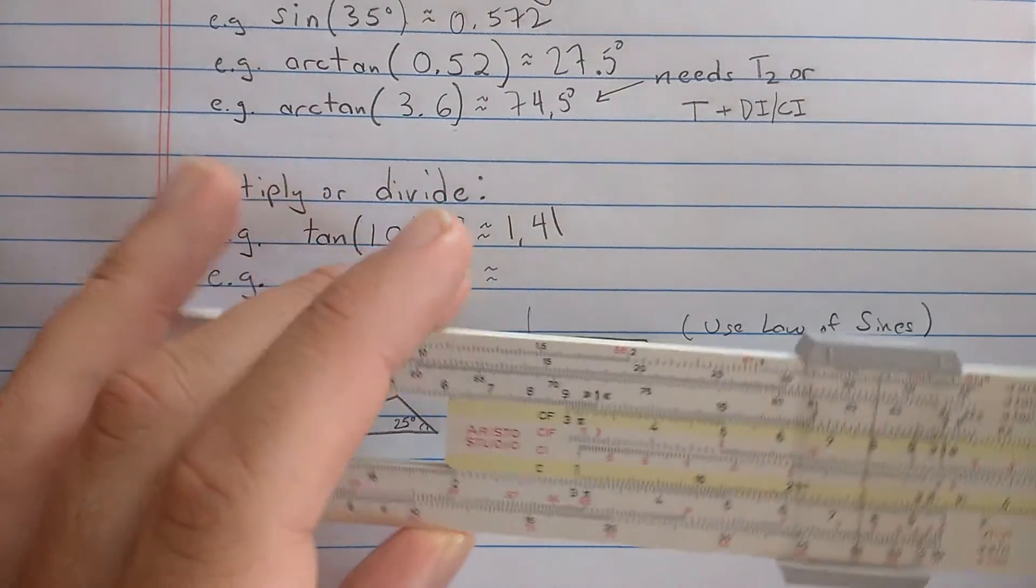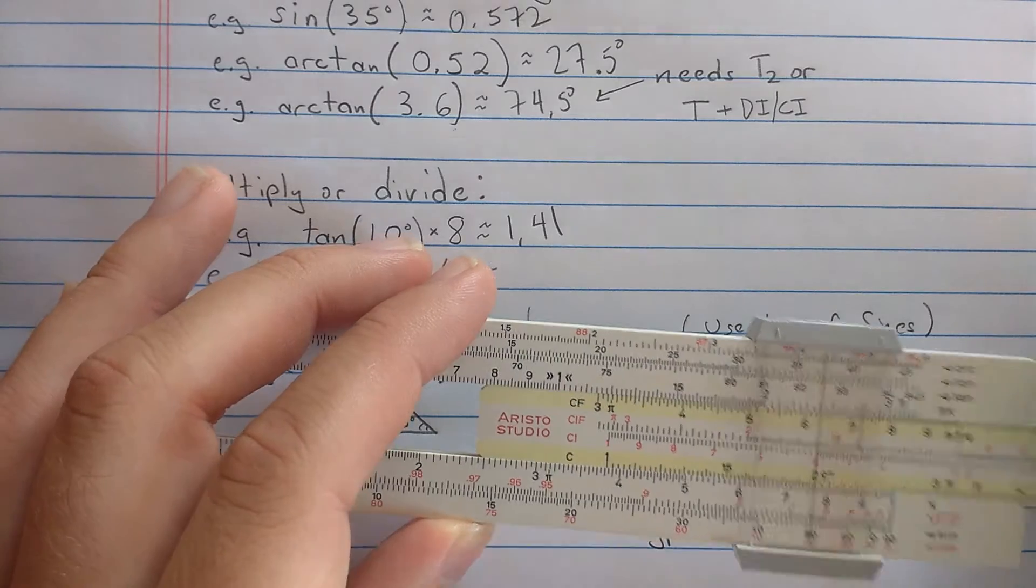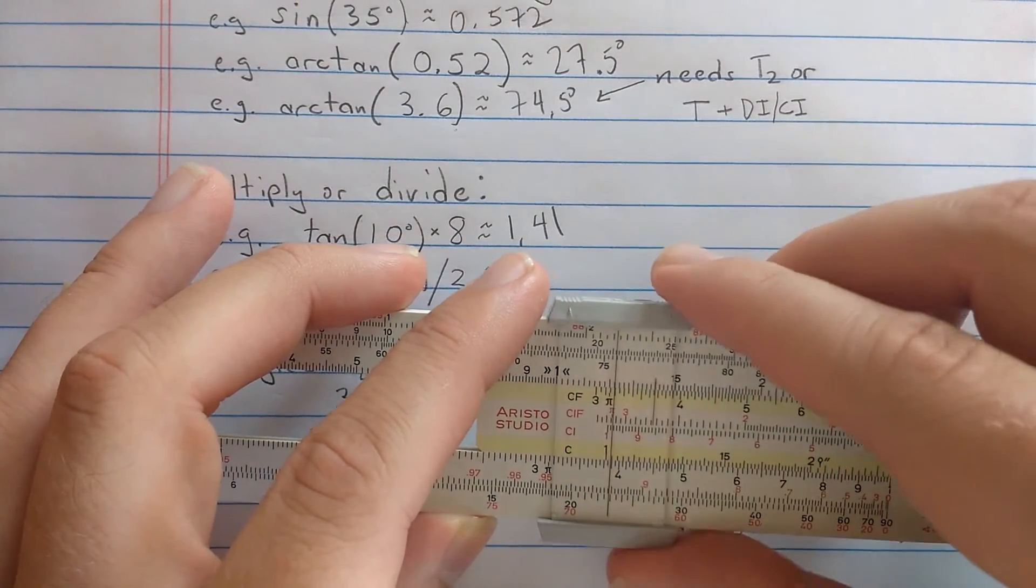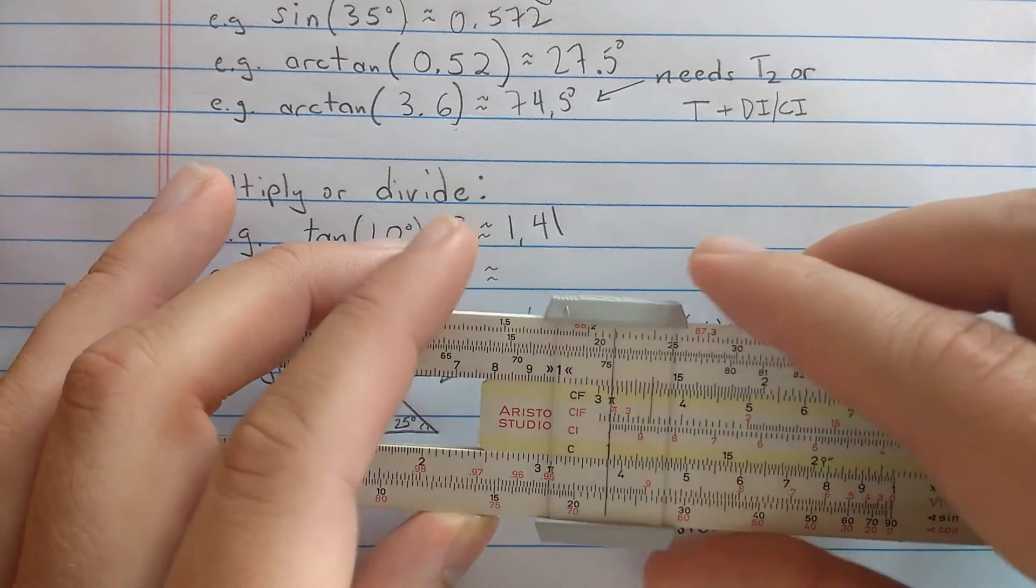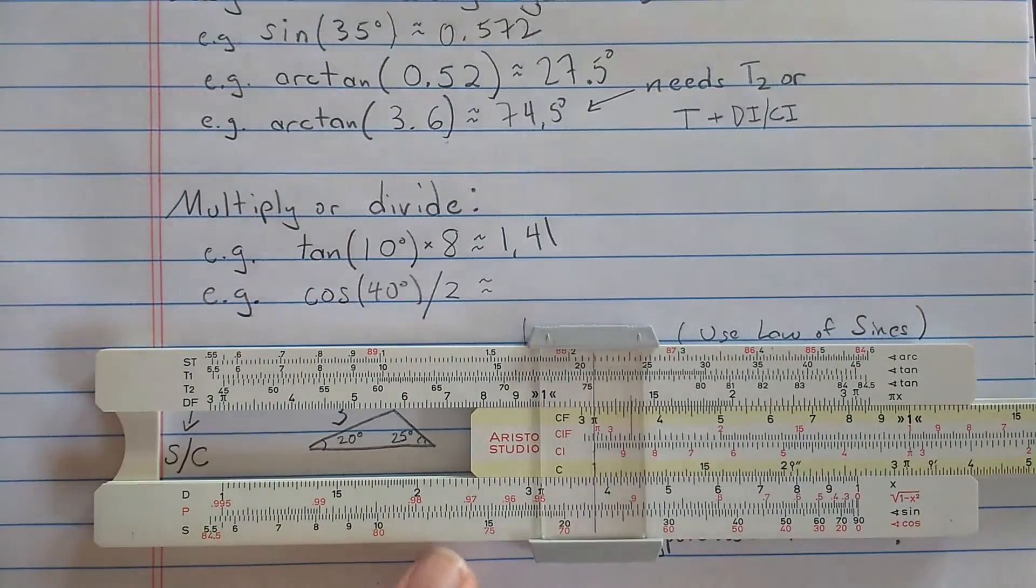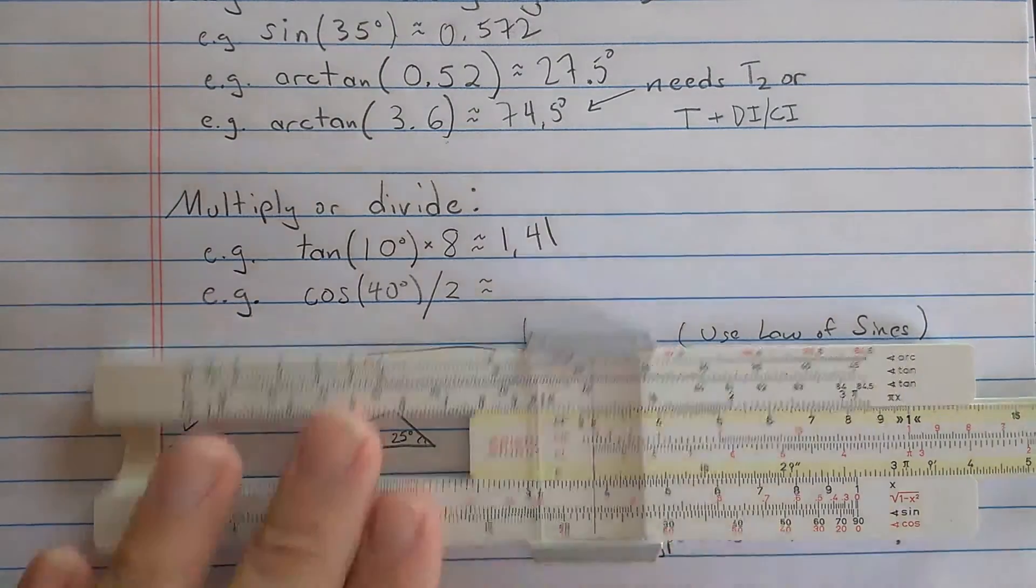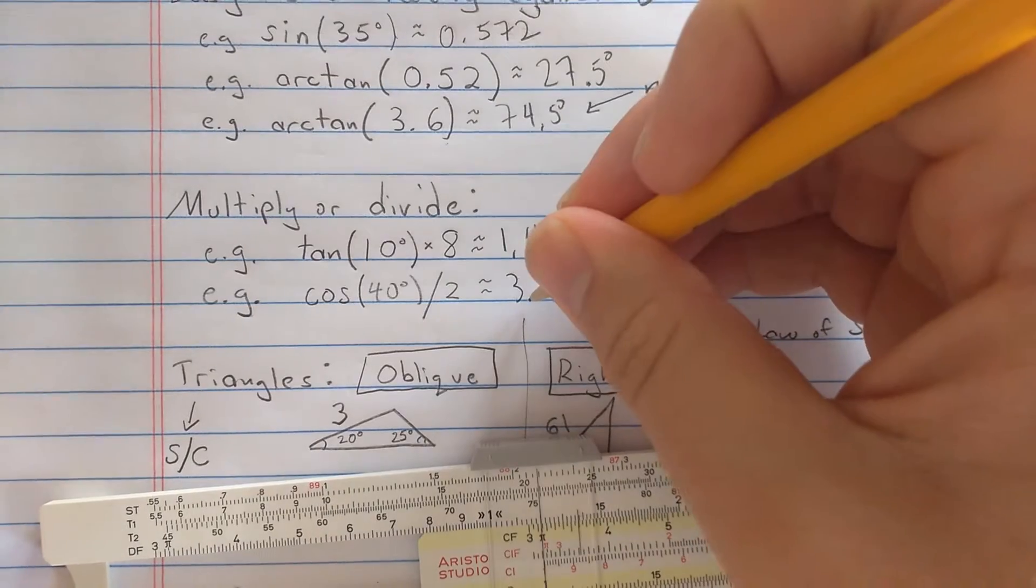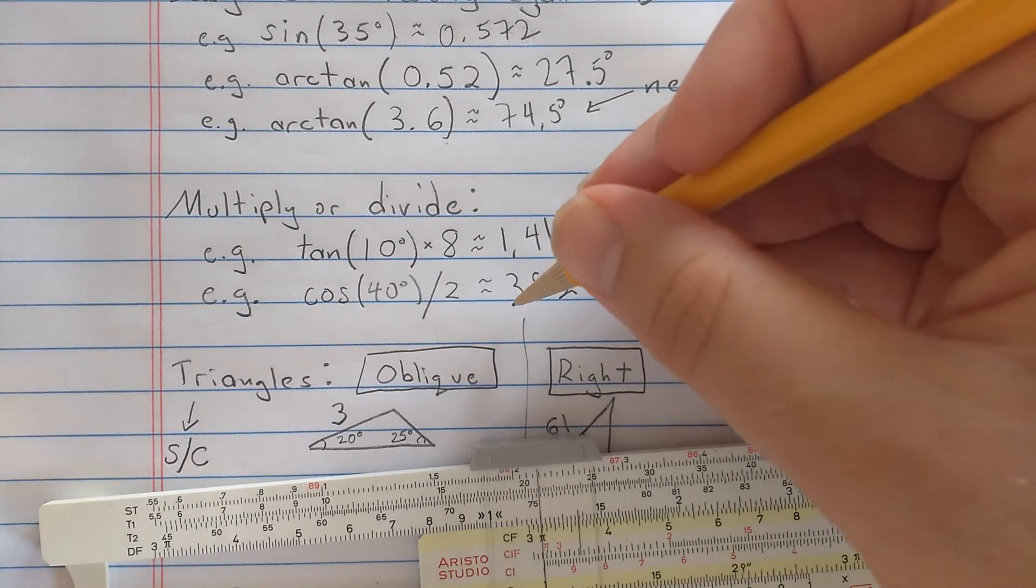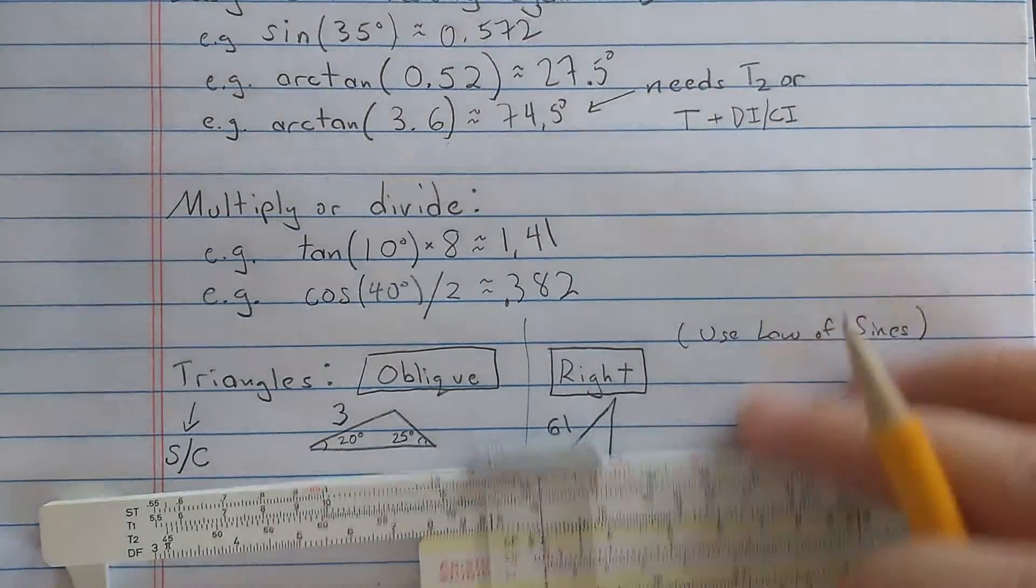So now the cosine of 40 degrees is appearing on the D scale. So I could divide by 2 simply by aligning the 2 on the C scale, coming out to the index, then D scale should have the results. And let's see, that's about 0.35678382 or so. And of course, that was the number between 0 and 1. Then I divided by 2. The decimal point will be there.